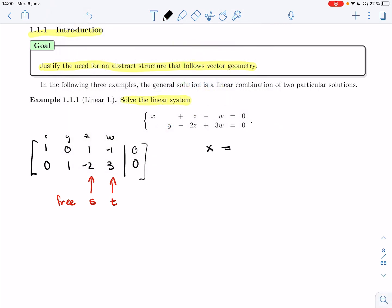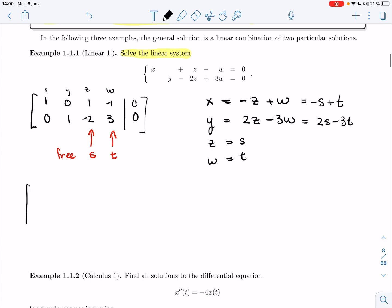S and t are going to be the parameters I choose, so z and w are free. If I rewrite the equation, I get that x equals minus z plus w, y equals 2z minus 3w, z is s and w is t. So I can rewrite this as x equals minus s plus t, and y as 2s minus 3t.